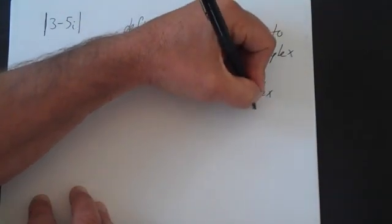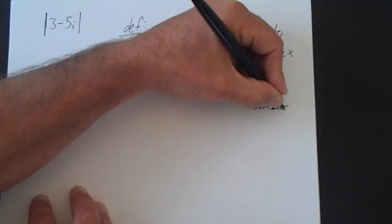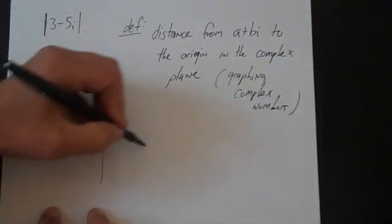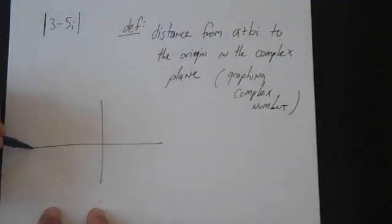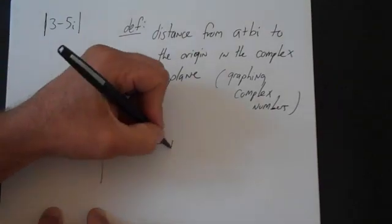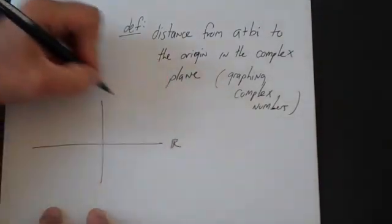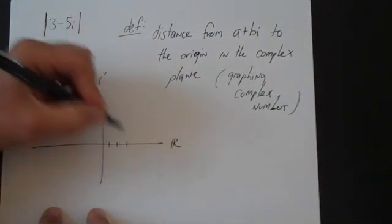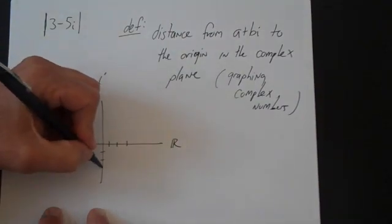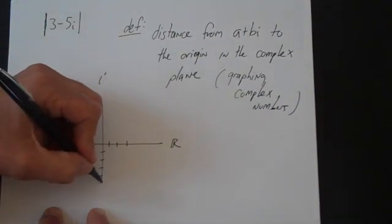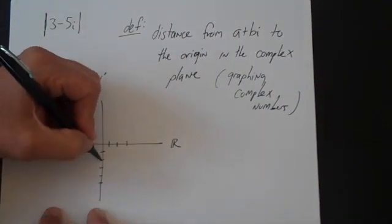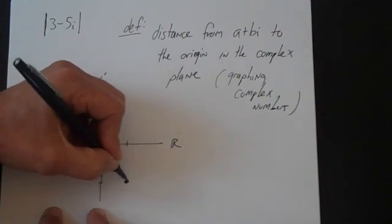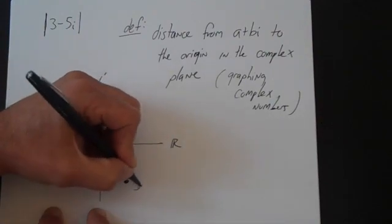So what we do here is first graph 3 minus 5i. This is the real axis and this is the imaginary axis. So counting along: 1, 2, 3 on the real axis, and 1, 2, 3, 4, 5 on the imaginary axis. So that's 3 minus 5i.